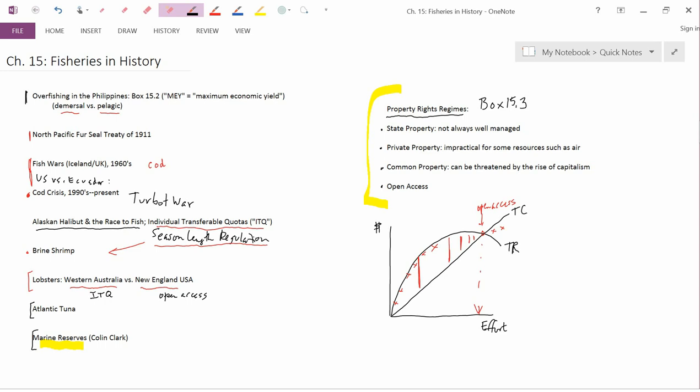We haven't really talked about externalities much in this chapter. But for instance, if you're in open access and you catch a fish, that means that the other fishermen can't catch that fish. So there's an external effect there. So one way of thinking about the difference in property rights is using the language of externalities.